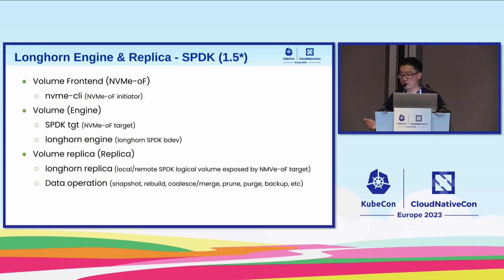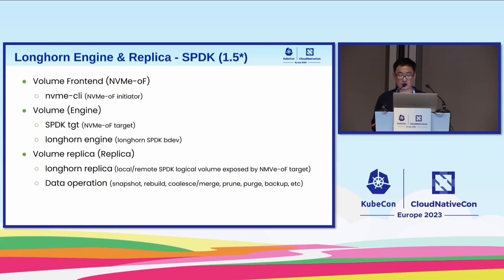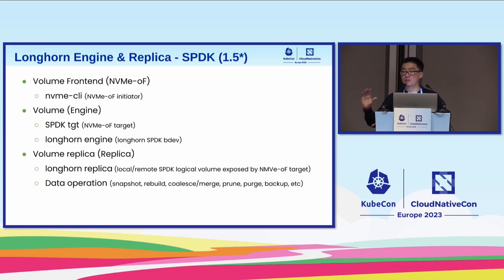Compared to the current Longhorn architecture, the SPDK-based version will replace the iSCSI front end with NVMe-oF — NVMe has a kernel module in the mainline kernel so no extra setup is needed. The volume engine will use SPDK-TGT and longhorn-SPDK-bdev instead of longhorn-TGT. The replica will be a remote or local logical volume provided by SPDK, supporting the same snapshot, merge, and coalesce operations. The user experience and architecture concepts stay the same.